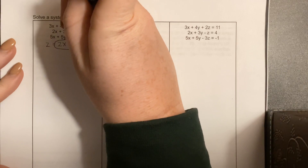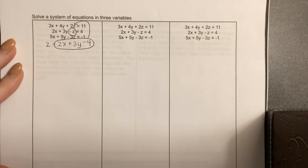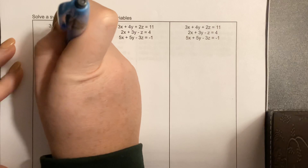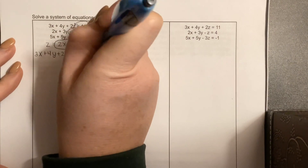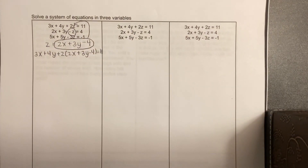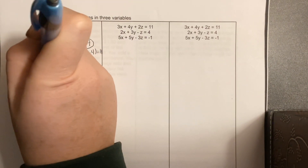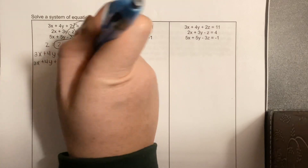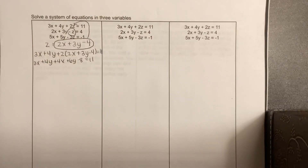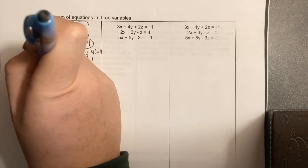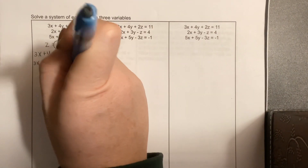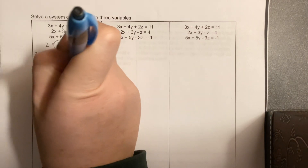I already feel like I'm going to run out of room, but we're just going to try our best. So I'm going to plug it into this one first and I'm going to get 3X plus 4Y plus 2 times the whole thing — 2X plus 3Y minus 4 — is equal to 11. You're going to distribute that 2 and then combine like terms. So I'm going to still have 3X plus 4Y, and then plus 4X plus 6Y minus 8 is equal to 11. Combine like terms: X's go together, so I have 7X; Y's go together, I have 10Y; and then that negative 8 needs to go to the other side, and that's going to become 19. Circle that because that is going to be needed later on.